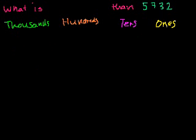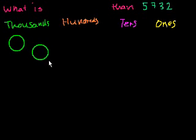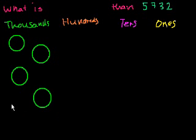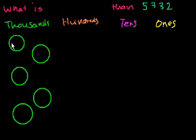So 5,000 — let me draw 5,000. It's green, so I draw 1, 2, 3, 4, 5 chips, and each of those represents 1,000.